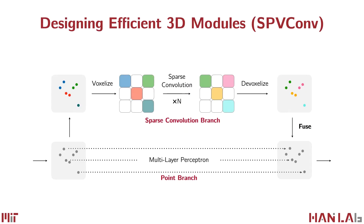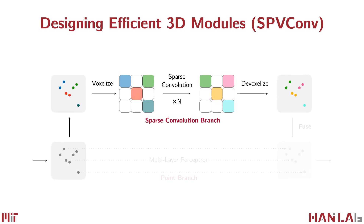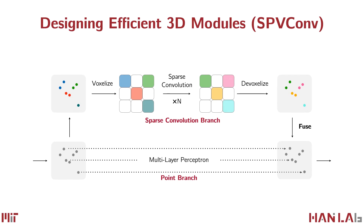To this end, we propose Sparse Point-Voxel Convolution, or in short, SPV-Conv — an efficient 3D module that equips the low-resolution sparse convolution with a high-resolution point-based branch. To exchange information between both branches, we propose a voxelize operation that converts the point-cloud representation to the sparse tensor representation, and a devoxelize operation that transforms the sparse tensor back to a 3D point-cloud. Both operations can be implemented very efficiently using a parallel hash table on the GPU. With just 4% computation overhead, the additional point-based branch is able to preserve fine details from large outdoor scenes.